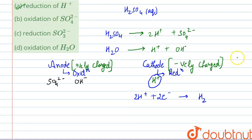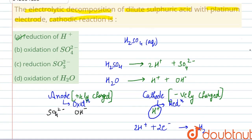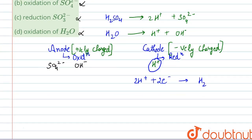The first option is correct. Option B gives oxidation of SO₄²⁻ — since reduction takes place at the cathode, oxidation can never be the answer, so options B and D are incorrect. Option C gives SO₃²⁻, which also cannot be the answer.